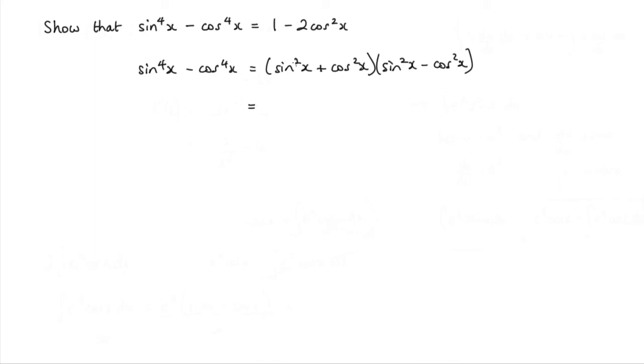Now, sine squared plus cos squared, we know that's equal to 1. So we've got 1 times this bracket here, which is sine squared x minus cos squared x.